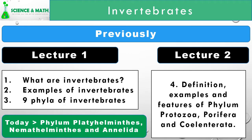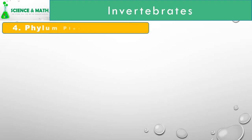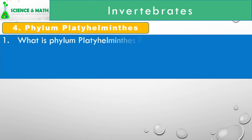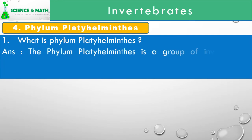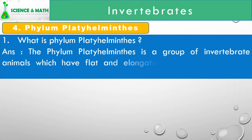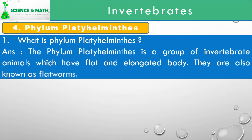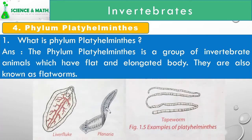Let us start with Phylum Platyhelminthes. The Phylum Platyhelminthes is a group of invertebrate animals which have flat and elongated body. They are also known as flatworms. For example, Liver Fluke, Planaria, and Tapeworms.